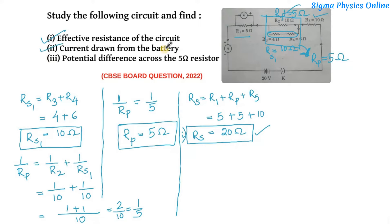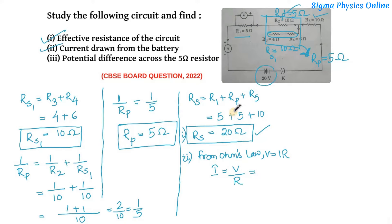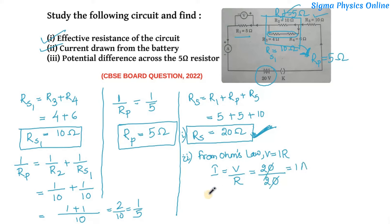Now for the second part — current drawn from the battery. We apply Ohm's law: V equals IR, so the current I equals V by R. The potential difference given is 20 volt and the effective resistance is 20 ohm. The effective resistance of the entire circuit controls the amount of current flowing, so with resistance 20 ohm, the current drawn from the battery is 1 ampere.